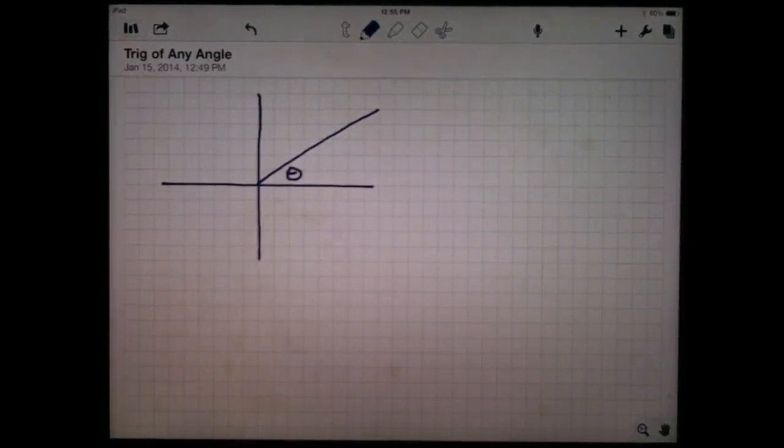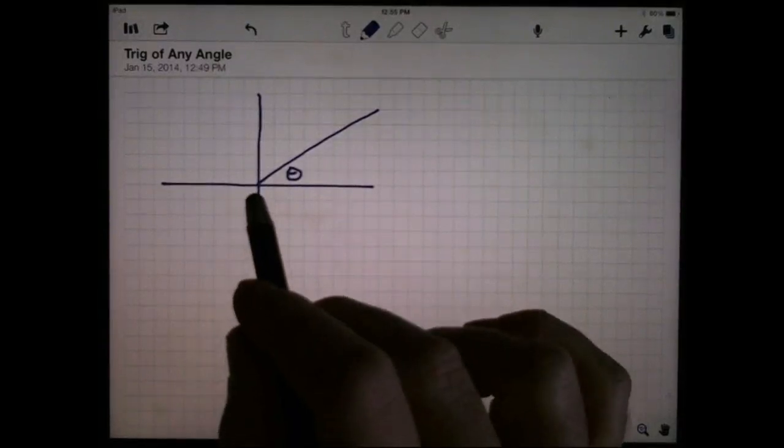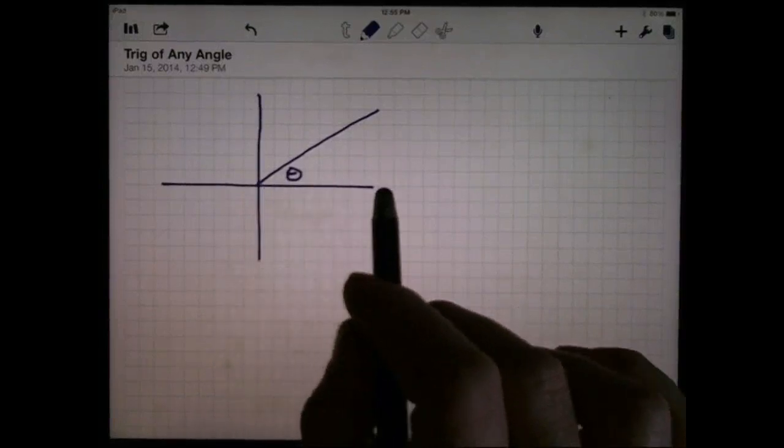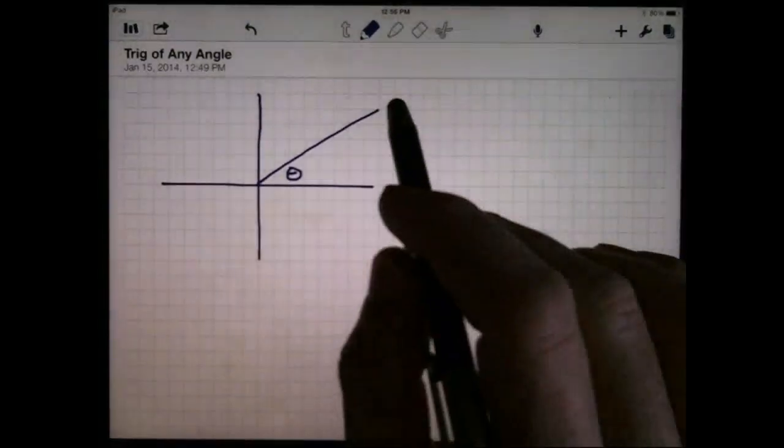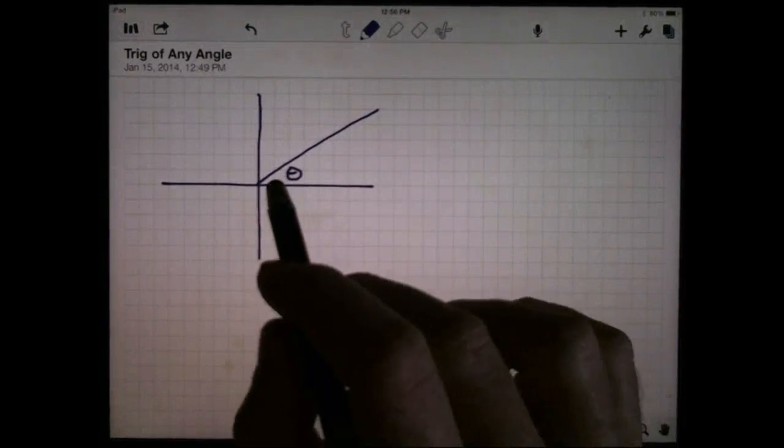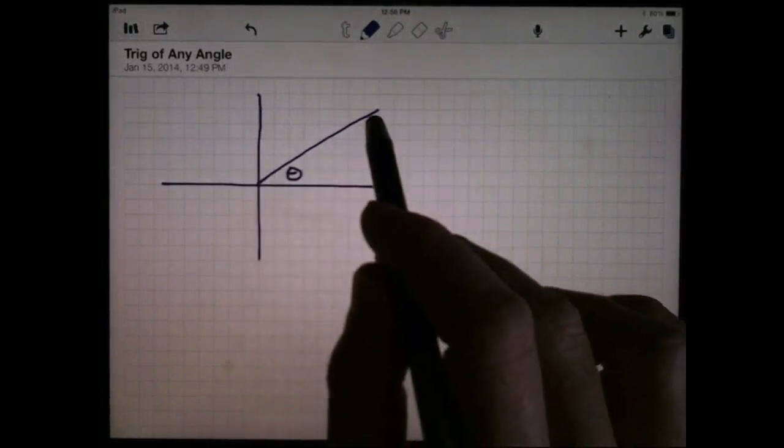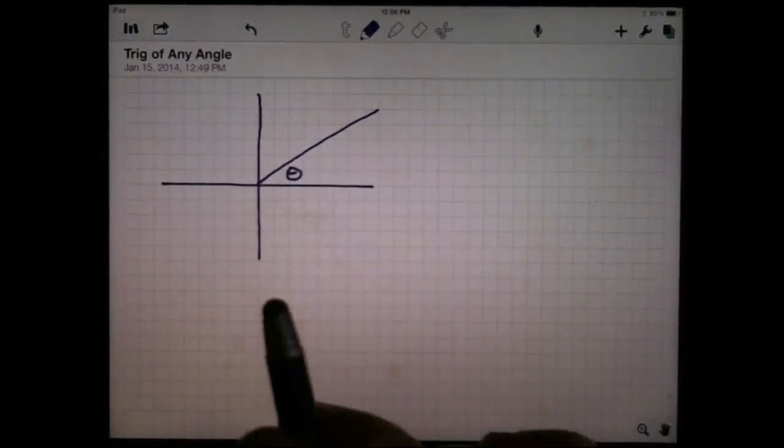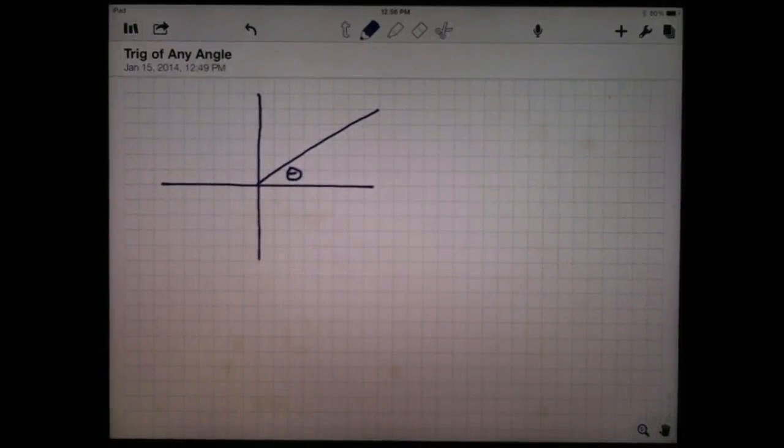The way I do this is I first put the angle in standard position. I've got the vertex at the origin, the initial ray in the direction of the positive x-axis, and the terminal ray wherever it ends up. I'm choosing to put this one here in the first quadrant, just for my first example. And we'll see how it relates to what we've already done.